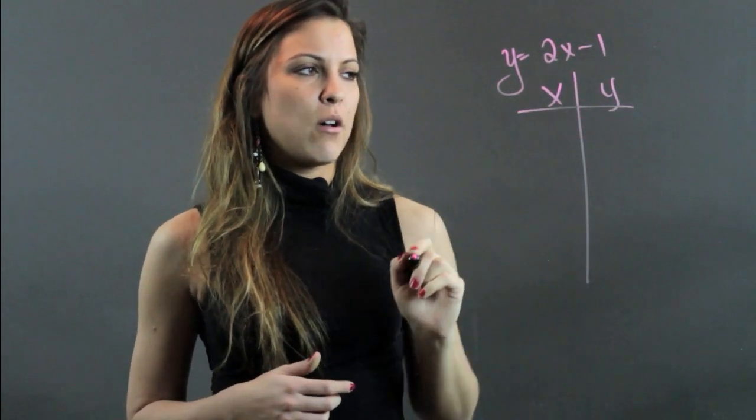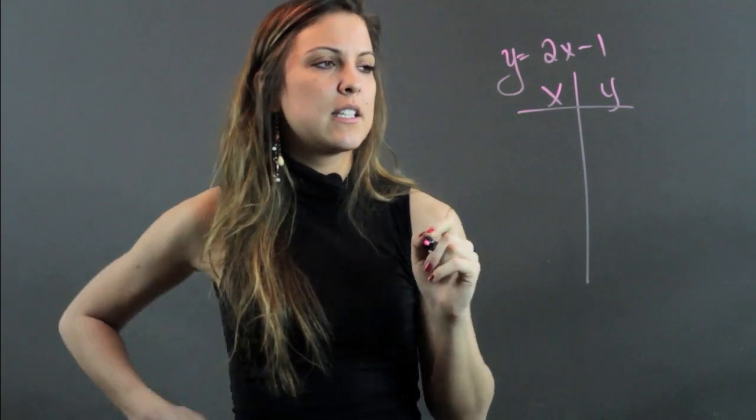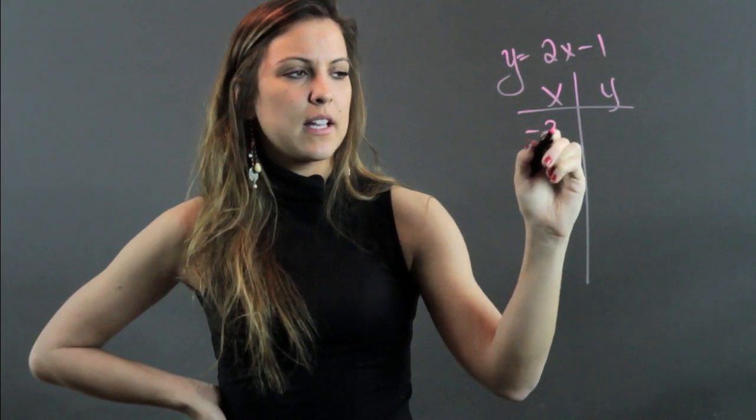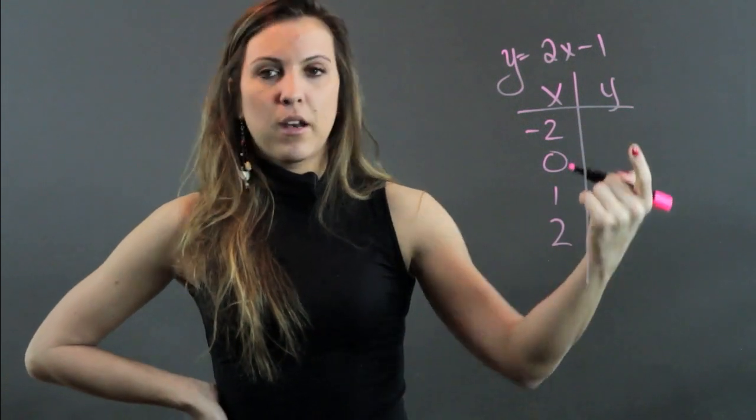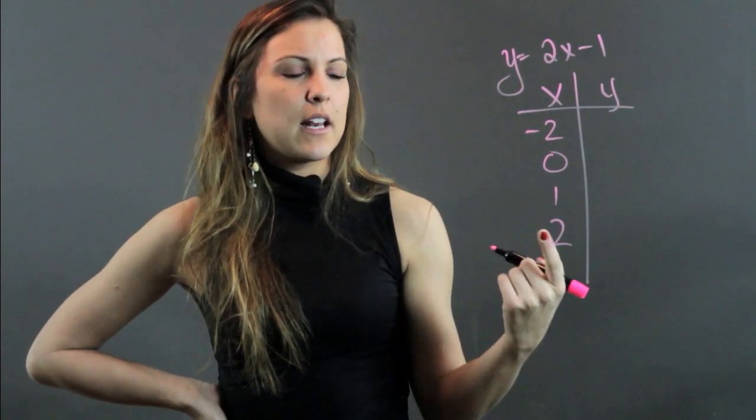Then we're going to make up a small function table. We're going to say x is, let's start with some negatives, let's say x is negative 2 and then we'll go to 0, 1, and positive 2. I'm going to fill in my range for the x that I made up.